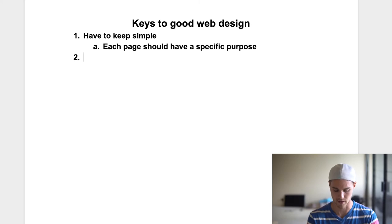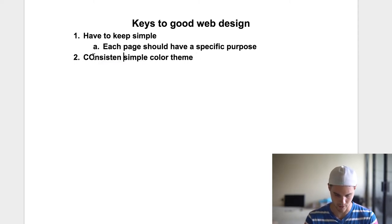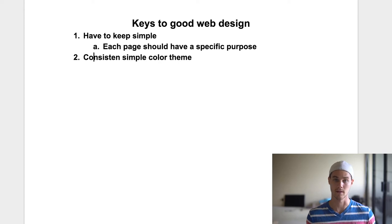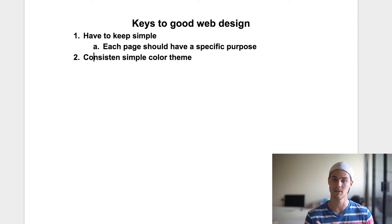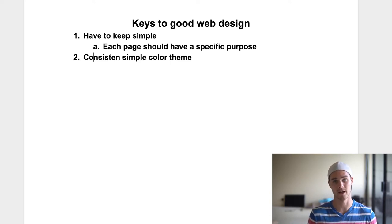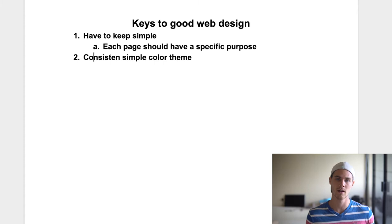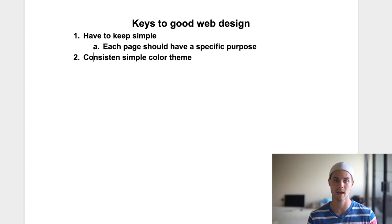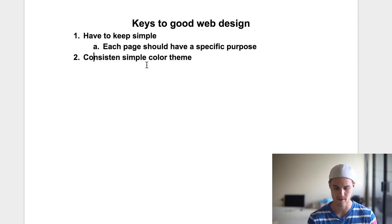The second thing is that you should have a consistent, simple color theme. I see a lot of websites, and there's nothing that screams scam like a website with 15 different colors — all neon pink, neon green, all that. Or even worse, if it's in the product description. What major retailer do you go to that has more than just black or gray text? Maybe white on a black background, or red text for a sale. But you're not seeing green, blue, pink — all these colors people throw in to stand out. To me, that screams scam.